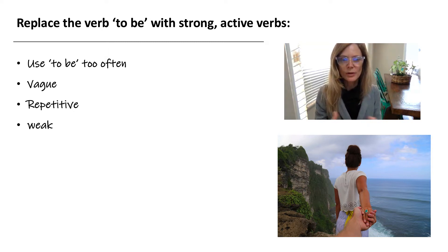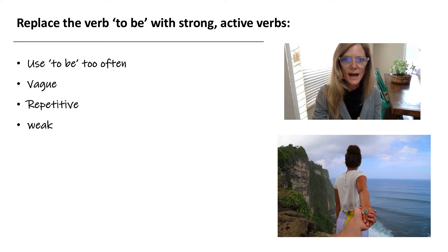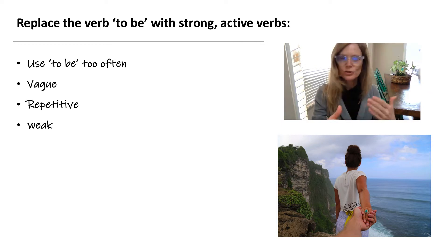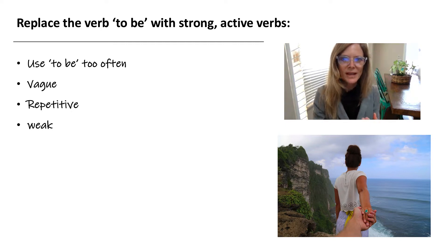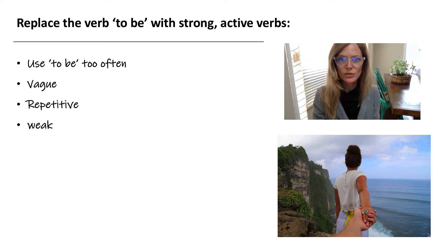Often when we write, even native English speakers like myself will rely on or use the verb 'to be' too often in our paper, and when we do that it makes our paper vague, it can be repetitive, and it makes our writing weak. So let me show you one way to change the verb 'to be' with a stronger, more active verb.